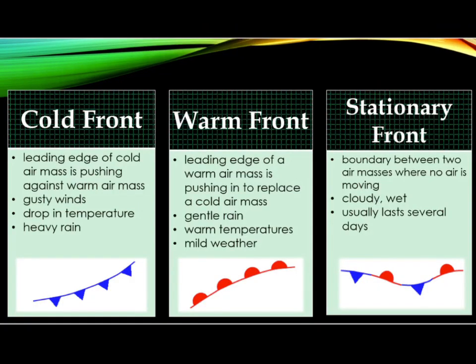Weather is determined by large bodies of air called air masses. Air masses can cover large areas of land, and most weather occurs at their edges, or fronts. There are three basic types of fronts used in weather forecasts.